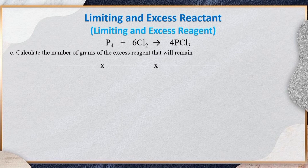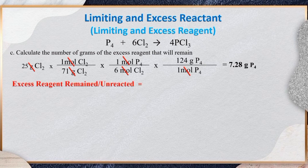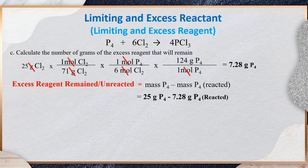In calculating the amount of excess reagent that will remain, we start by computing the amount of P₄ reacted by converting the limiting reagent to moles of limiting reagent, then getting the mole ratio of the reactants P₄ and Cl₂, then converting moles of excess reagent to the amount of excess reagent that is being reacted, giving you 7.28 g P₄. Finally, we compute the excess reagent remaining by subtracting the reacted mass of P₄, which is 7.28 g, from the total mass of P₄, which is 25 g, giving us 17.72 g of unreacted or remaining P₄.